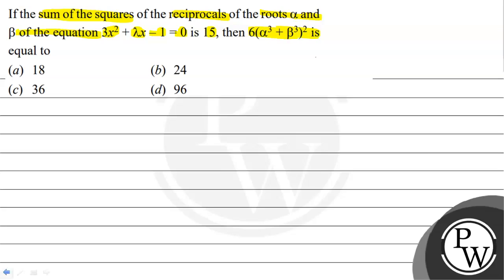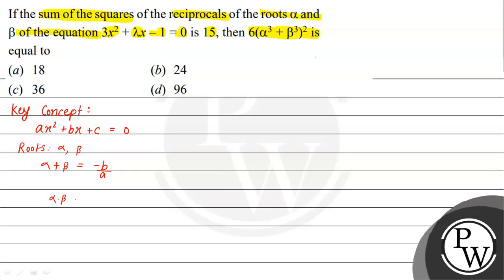The key concept to solve this question: for a general quadratic equation ax² + bx + c = 0, if α and β are the roots, the sum of roots is α + β = -b/a, and the product of roots is α × β = c/a. This is the key concept we will use.